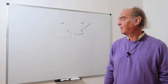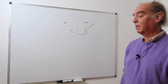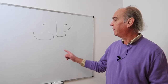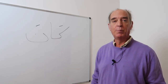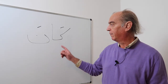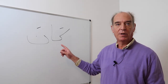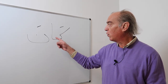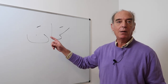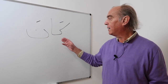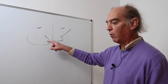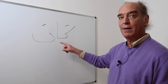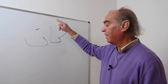Ahlan wa sahlan. This time we're going to talk about a verb which is very important in Arabic grammar. It's the verb kana. Kana is the verb 'to be.' You remember that verbs in Arabic are always quoted in third masculine past form, so the word kana means 'he was.' Kana is a weak verb with only two consonants: kaf and nun, and the third consonant is hidden behind the aleph.